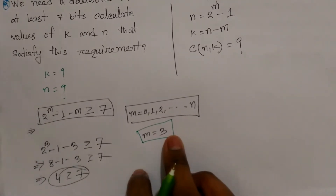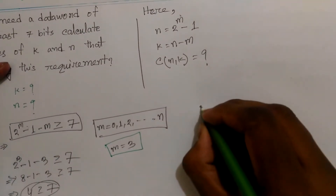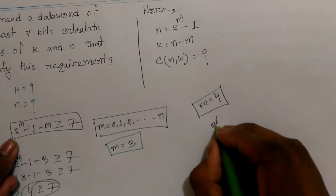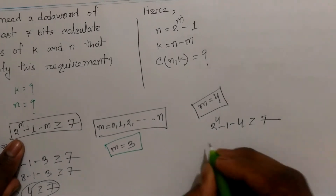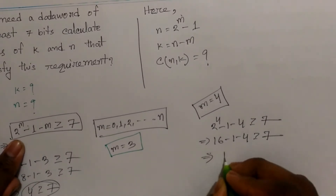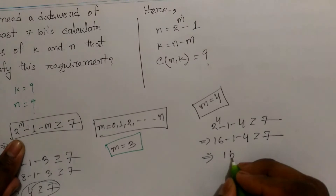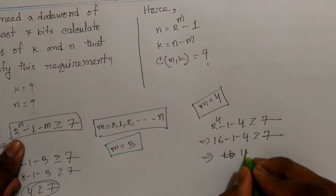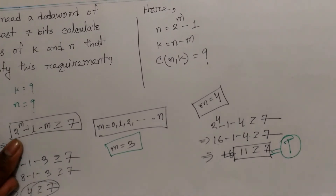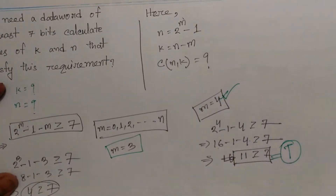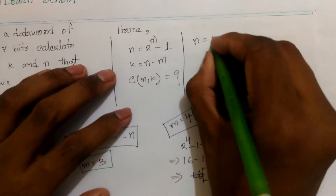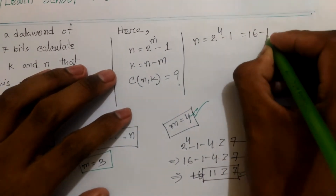The output is equal to 7. So the output is equal to 3. 2 to the power 4 minus 1 is equal to 5.